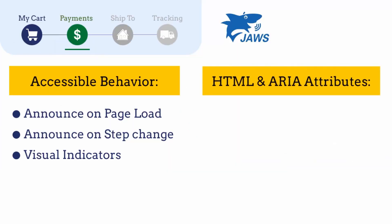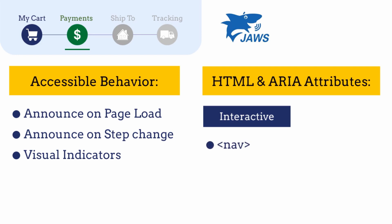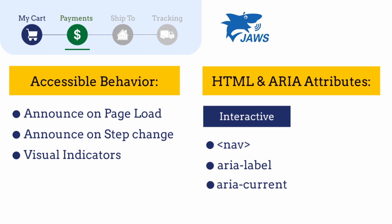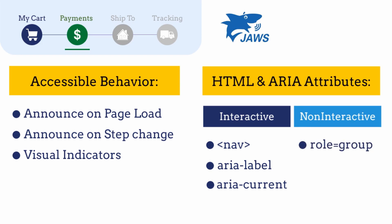Let's cover the ARIA attributes needed to achieve accessibility for the step progress bar. For interactive step bars, we should use the nav tag to group elements together, add aria-label to give more context to non-sighted users, and add aria-current equals true to the step the user is currently on. For non-interactive step bars, we should add role equals group to the parent div, use an ordered list instead of unordered list for better semantic information, add sr-only hidden text to convey if a step is completed, and add aria-current equals true for the active step.